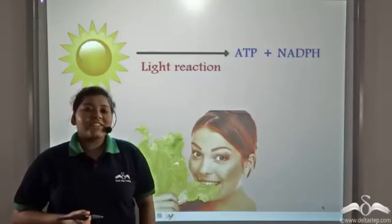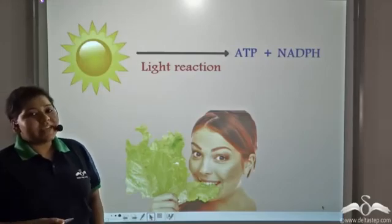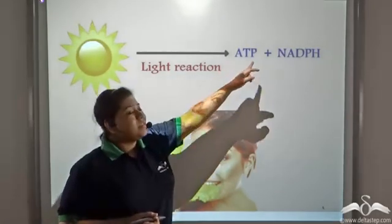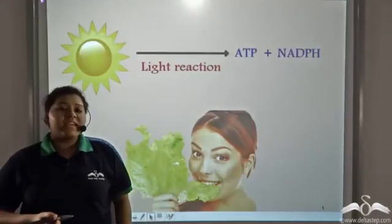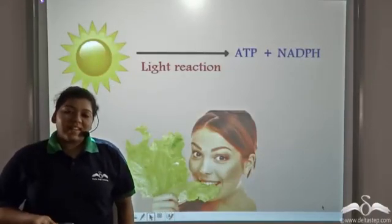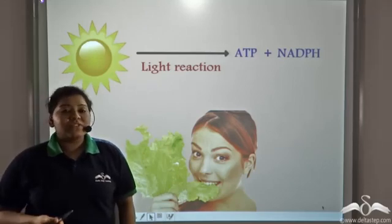In the light reaction, light energy is converted into chemical energy in the form of ATP and NADPH. This is not the main aim of photosynthesis. The main aim of photosynthesis is to manufacture food.